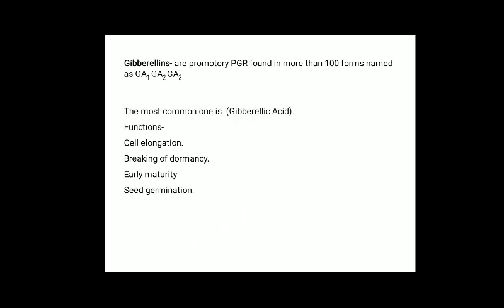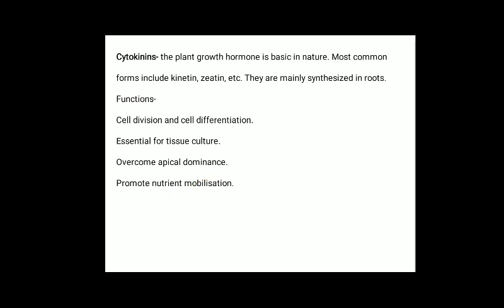Gibberellins are growth-promoting PGRs found in more than 100 forms, named as GA1, GA2, GA3, etc. The most common one is gibberellic acid. Functions include cell elongation, breaking of dormancy, early maturity, and seed germination. Cytokinins are plant growth hormones that are basic in nature; the most common forms include kinetin and zeatin. They are mainly synthesized in roots. Functions of cytokinins include cell division, cell differentiation, essential role in tissue culture, overcoming apical dominance, and promoting nutrient mobilization.